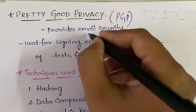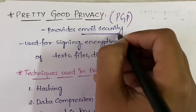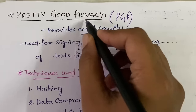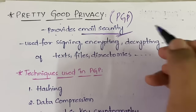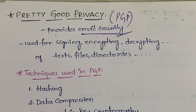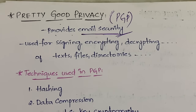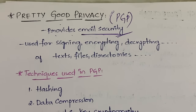First, why do we need PGP? In order to provide email security. Pretty Good Privacy is used to provide email security — that is, when you are sending an email to a friend, lecturer, or anybody, security means that email is not accessible or seen by any other person.